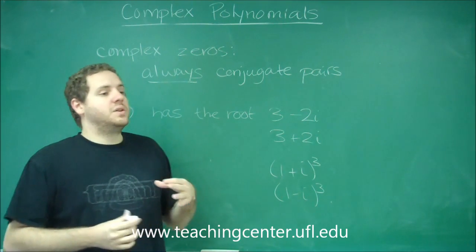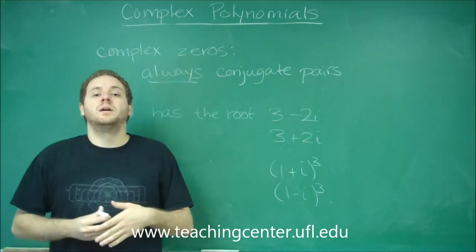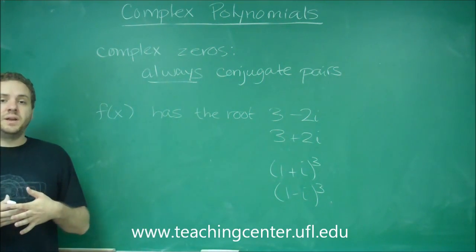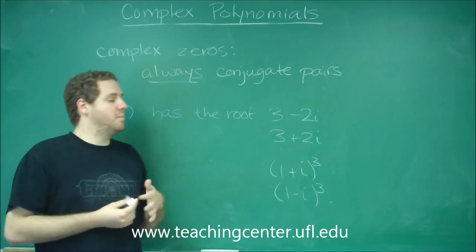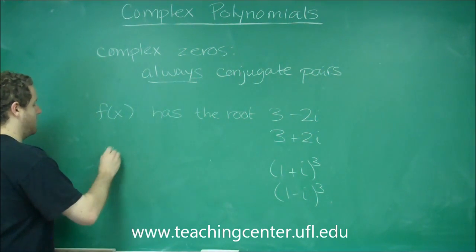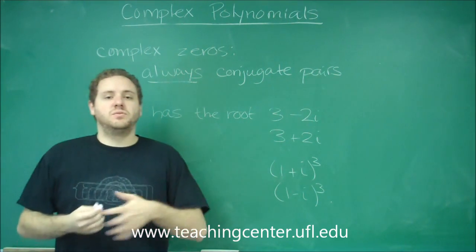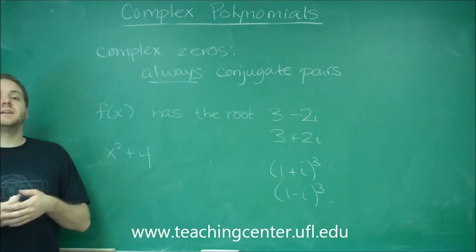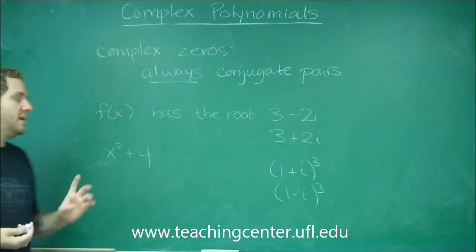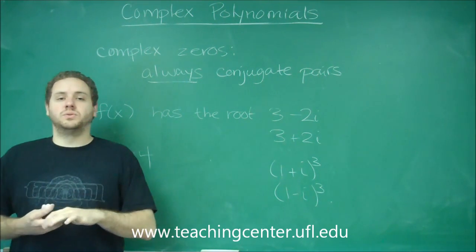Now remember that the number of zeros of a polynomial is exactly its degree in the complex plane. Now remember when you had a function, for example, like x squared plus 4, that's a simple function that you've graphed before and that doesn't have any zeros. It doesn't touch the x-axis, so many times you said x squared plus 4 has no roots.